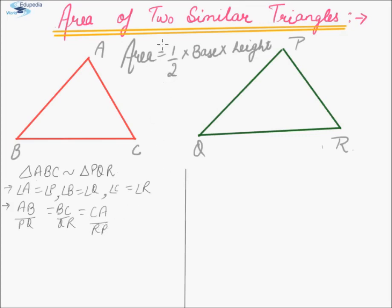We know that the area of a triangle in its simplest form is half into base into height. If we look at the two triangles, for the first triangle, let the base be BC. We need to construct a perpendicular from A to BC — let this be AD. Similarly, let us construct another perpendicular from P to QR, assuming QR as base, and let it be PM.